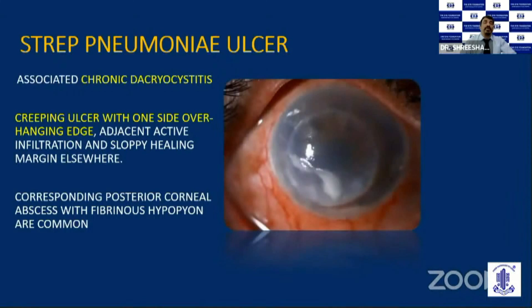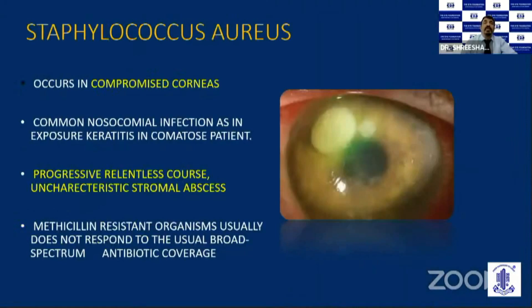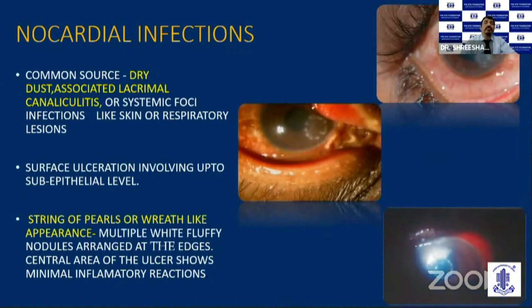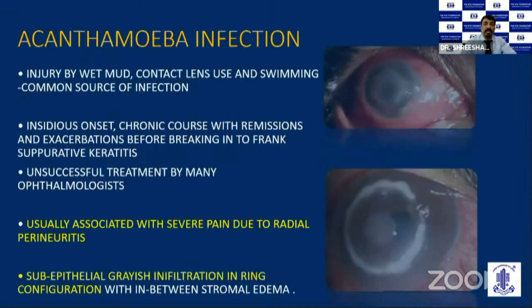Coming to specific infective ulcers, most of this has been covered by the previous speakers, Dr. Wanadhi and Dr. Namrata Sharma. They have specific characteristic features that must be identified before test reports are out. Copious mucopurulent discharge and dense stromal suppuration are typically seen in Pseudomonas ulcer. A string of pearls or wreath-like appearance of infiltrate is typical of Nocardial infection in the initial stage. Non-tuberculous mycobacterial infection can have a cracked windshield or cracked mirror appearance.